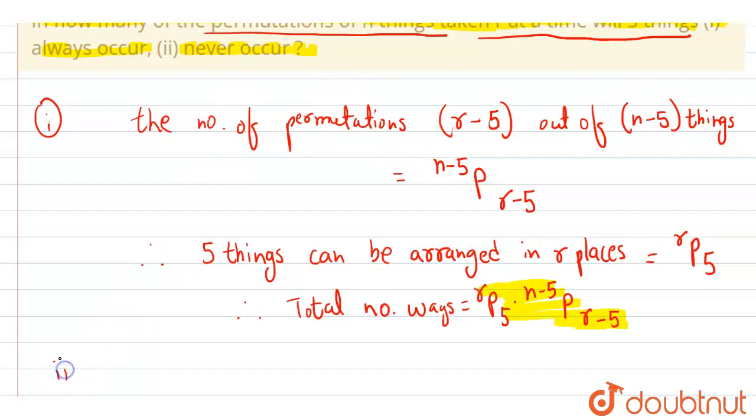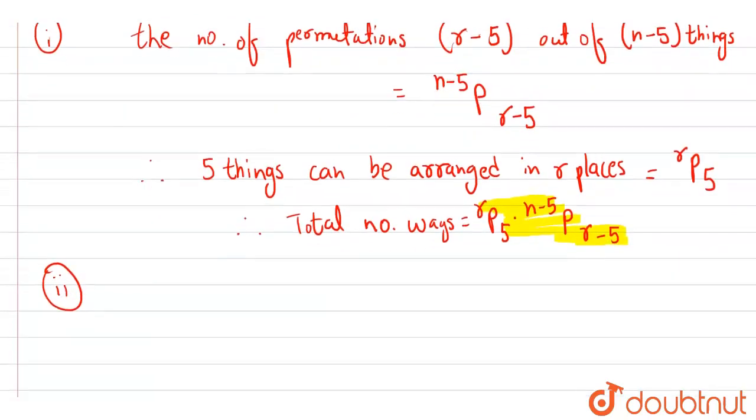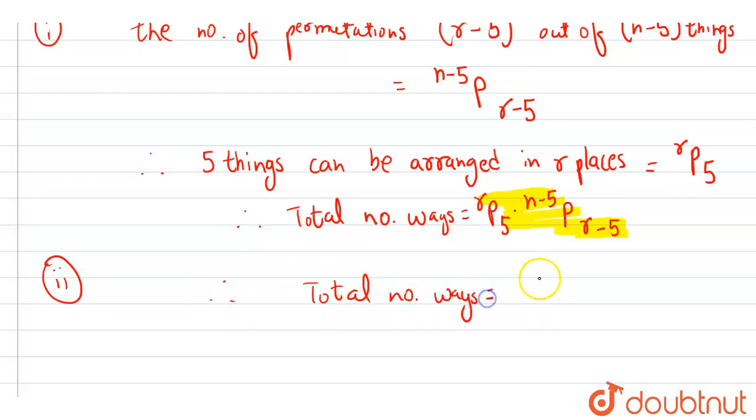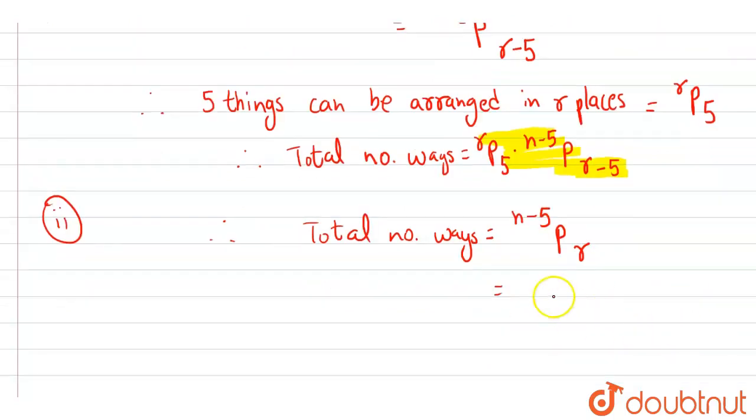Next we will see the second part, that is when the 5 things never occur. For never occur, we know the total number of permutations will be n-5 P r, which can also be represented by n-5 factorial upon n-r-5 factorial. So this is the answer of our second part. Hence, these two are the answers. Thank you.